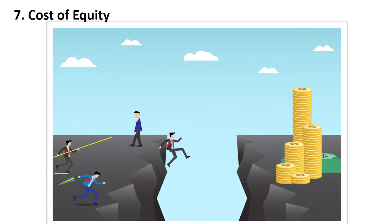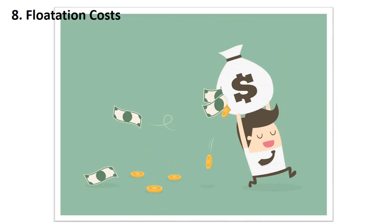Next is cost of equity. Stock owners typically expect a very high rate of return compared to debt holders, because they are the real owners of the company. Whenever a company borrows money from other sources, it reduces the return for equity shareholders, which affects capital structure.